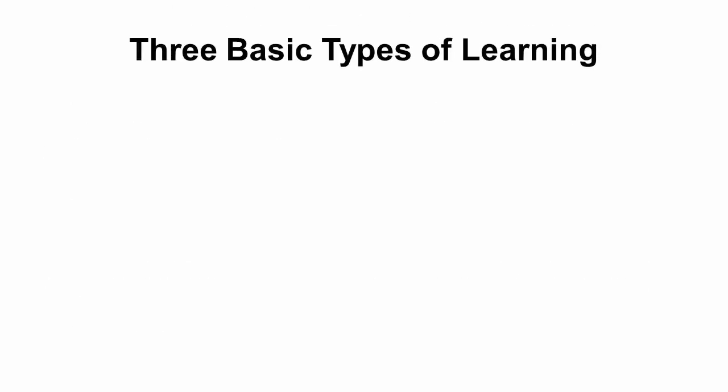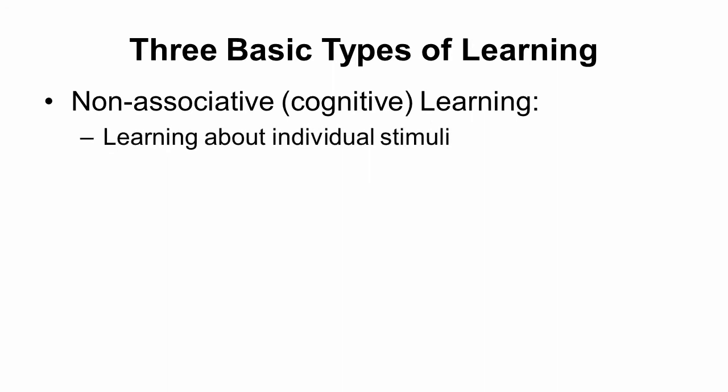So there's basically three kinds of learning. You have non-associative learning, sometimes called cognitive learning, where you are learning about the importance of various kinds of stimuli in the environment.